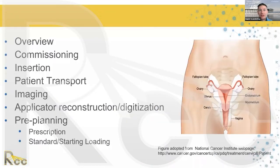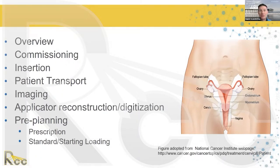This is Topic 4, Session 12: the clinical use of the tandem and ring applicator. The outline follows the procedure from introducing the applicator in the clinic to pre-planning, insertion of the device, transport for imaging, imaging itself, and then planning with the applicator reconstruction. That includes the planning aims and the prescription, followed by quality assurance checks prior to initiating treatment.